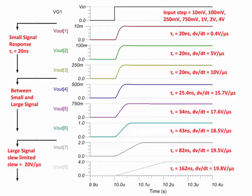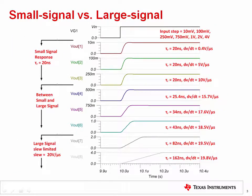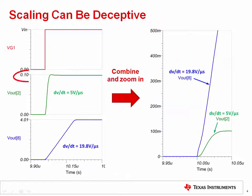Because of the way the output signal is scaled in this figure, it is possible to be tricked into thinking that the slew rate limited signal at the bottom of the figure is moving more slowly than the small signal response at the top. This is not the case. The left-hand side shows the small signal response to a 100 millivolt input in green, and the large signal response to a 4 volt input in blue, scaled to equal height. On the right, we combine the two responses to emphasize that the large signal response is slew rate limited, changing much faster at 19.8 volts per microsecond, while the small signal response is only changing at 5 volts per microsecond.